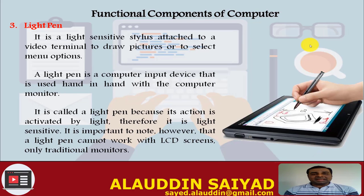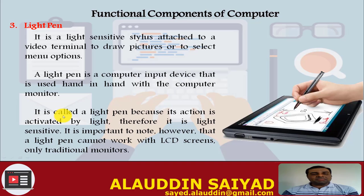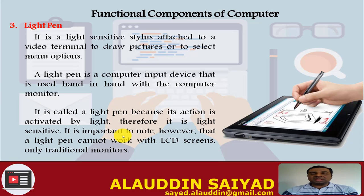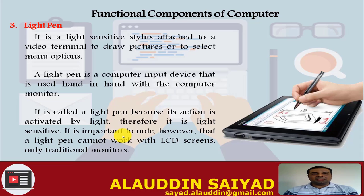Light Pen. It is a light-sensitive stylus attached to video terminals to draw pictures or to select menu options. A light pen is a computer input device used hand-in-hand with a computer monitor. It is called a light pen because its action is activated by light — it is a light-sensitive pen. A light pen cannot work with LCD screens; for LCD screens there is a stylus. In earlier CRT monitors, light pens were used to pinpoint on screen and draw, similar to how we use a stylus today.